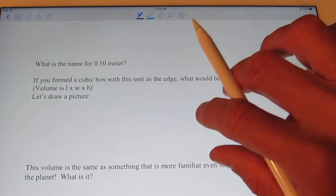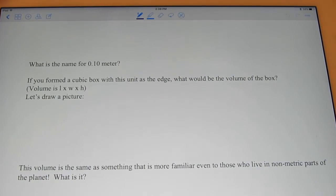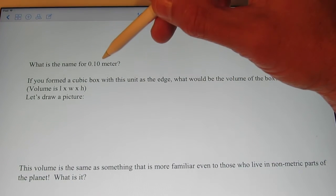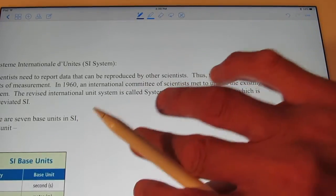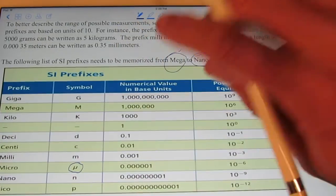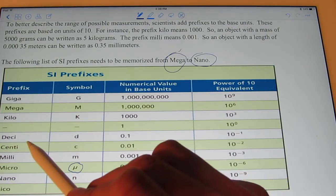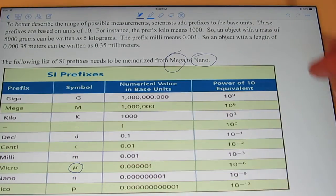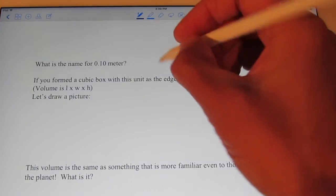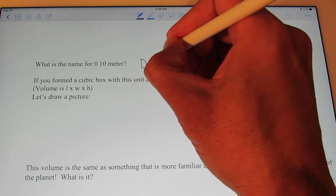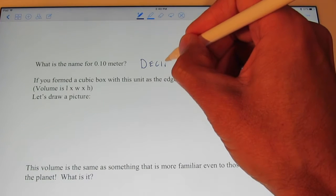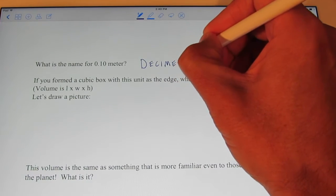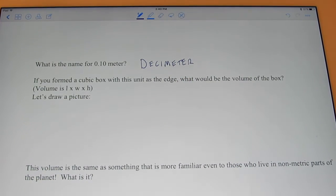So, let's take a look at our next page here, and let's practice a few of these. What was the name for a tenth of a meter? Let's look. A tenth of a meter was deci, wasn't it? So, we're gonna write deci, and if we're gonna measure length, it would be a decimeter.